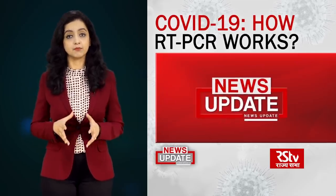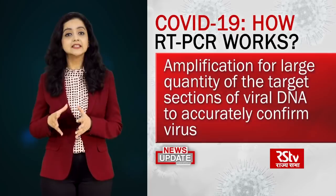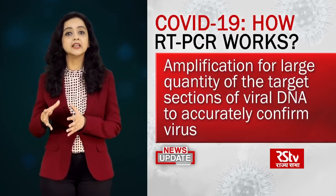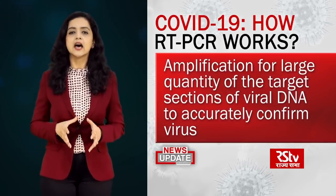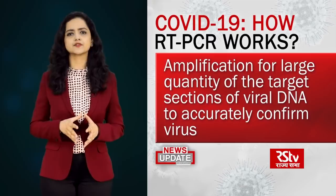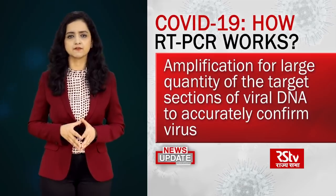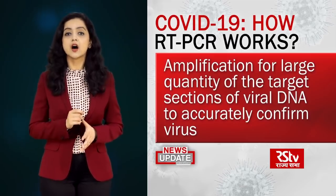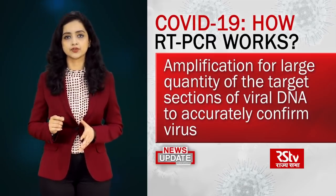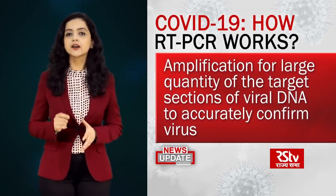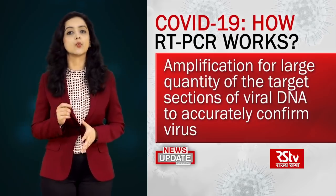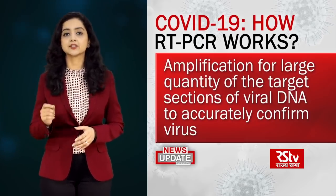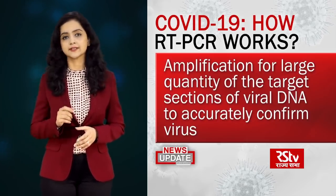Amplification is important so that instead of trying to spot a miniscule amount of the virus among millions of strands of genetic information, scientists have a large enough quantity of the target sections of the viral DNA to accurately confirm that the virus is present.